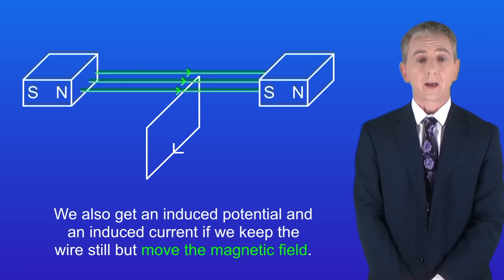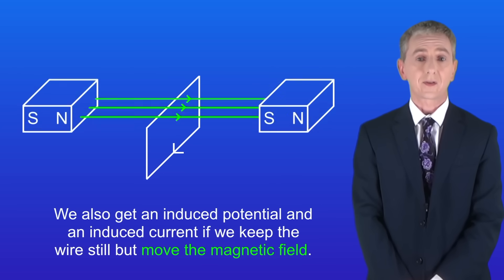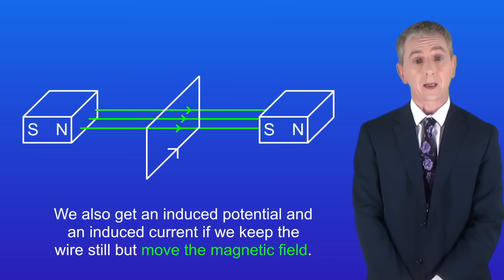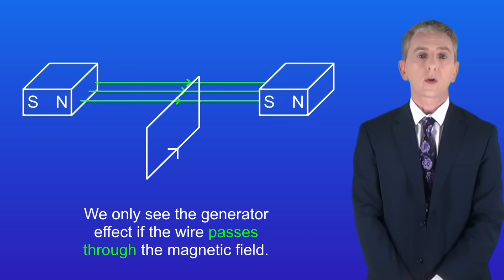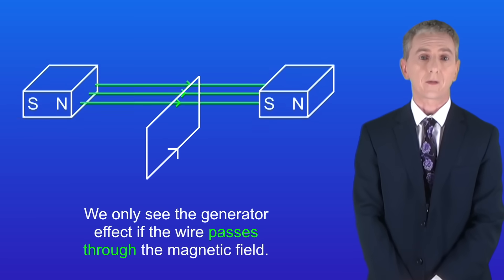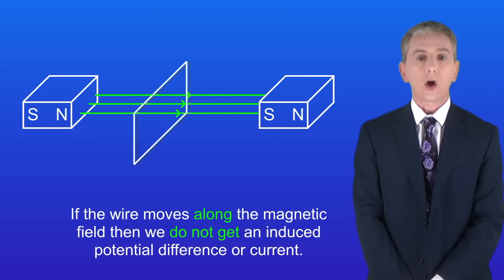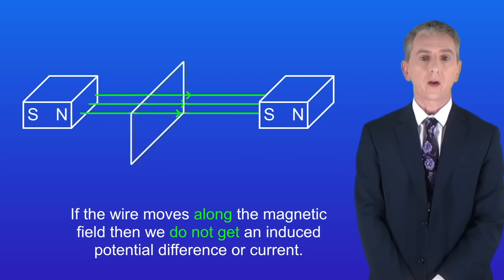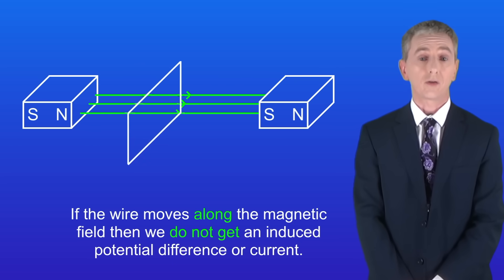We also get an induced potential and an induced current if we keep the wire still but move the magnetic field like this. There is one key point here. We only see the generator effect if the wire passes through the magnetic field. If the wire moves along the magnetic field like this, then we do not get an induced potential difference or current.